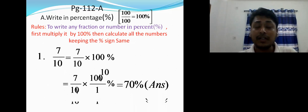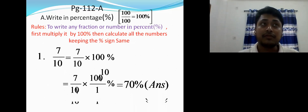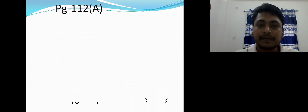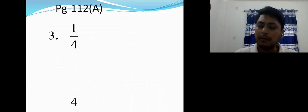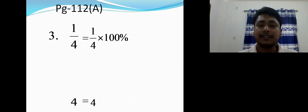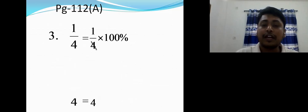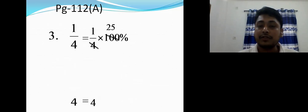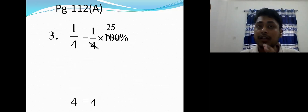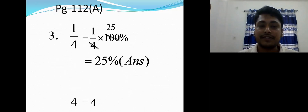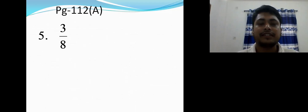You do not need to make the denominator 100 — don't think like that. Now for 1/4, the same way: multiply 1/4 by 100 percent. Four and 100 can be cancelled — 4 goes into 100 twenty-five times. So the denominator becomes 1 and the answer is 25 percent.